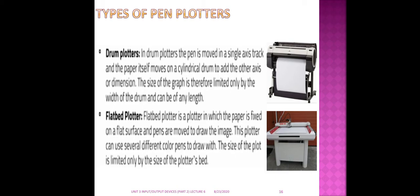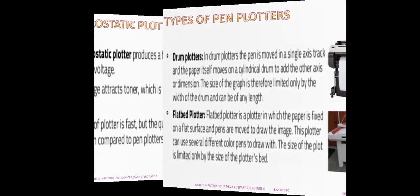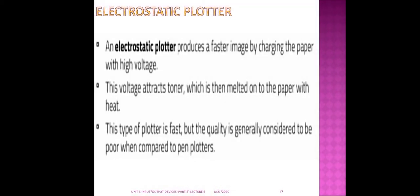The flatbed plotter gives only limited print. The electrostatic plotter produces a faster image by using high voltage to charge the paper; this voltage attracts the toner, which is melted onto the paper with heat. It is fast, but the result is poor when compared to pen plotters.